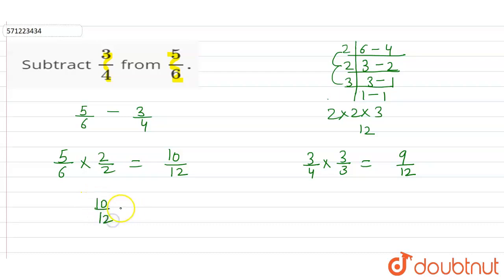Now we have to subtract 10 by 12 minus 9 by 12. Now the denominator is the same, so the LCM will be the same, 12. Now we just have to subtract 9 from 10, so 10 minus 9 will be equal to 1 by 12. So this is the required answer.